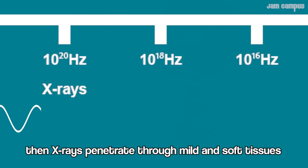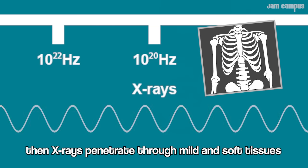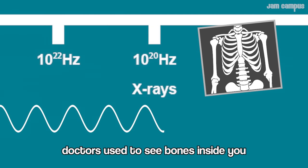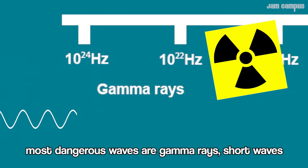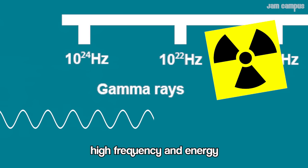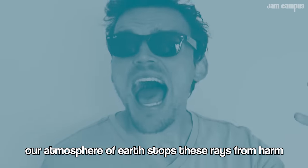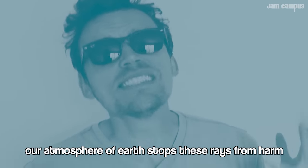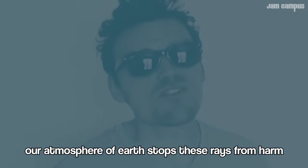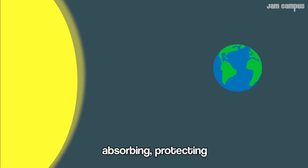Next, the X-rays penetrate through mild and soft tissues — doctors use them to see bones inside you. Most dangerous rays are gamma rays — the short waves, high frequency, high energy. Our atmosphere, our earth, stops its rays from absorbing us.